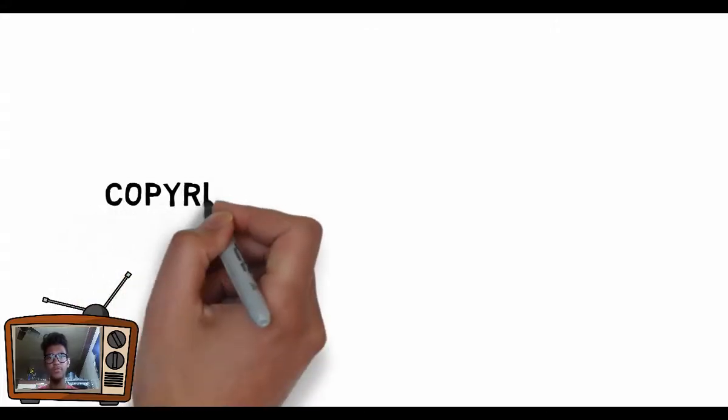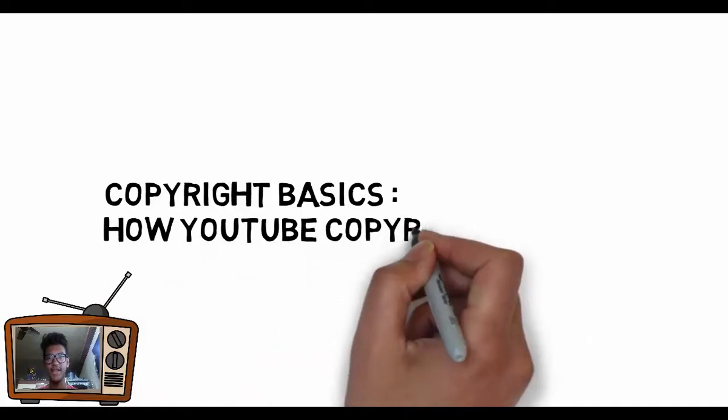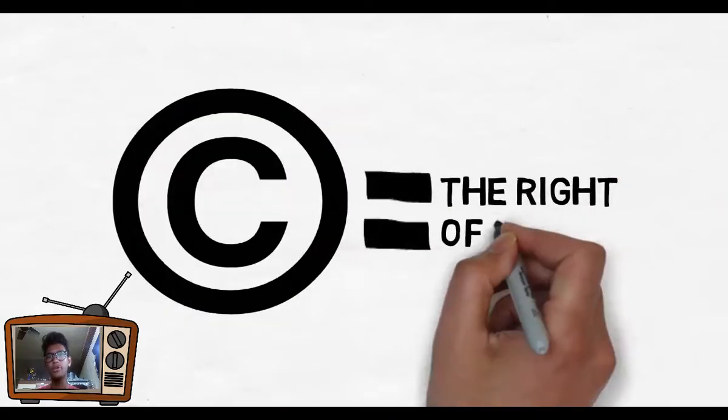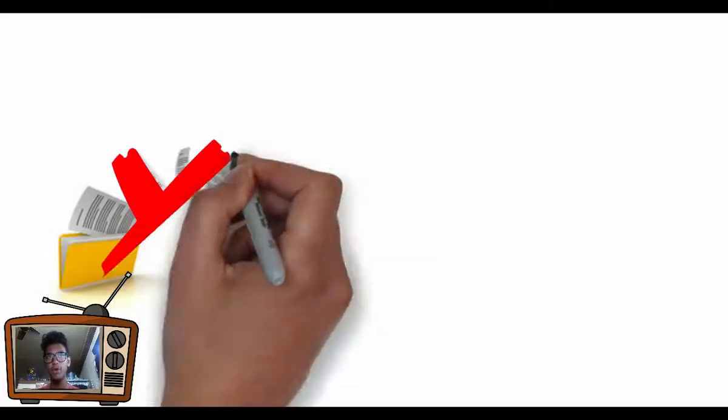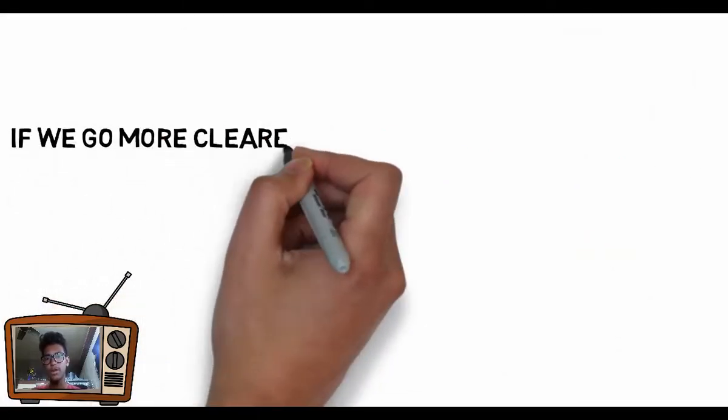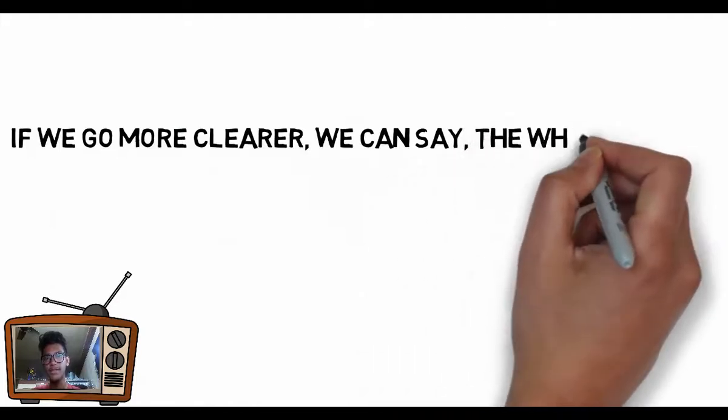So today in this video I'm going to tell you the copyright basics and how copyright works. First of all, the term copyright is the right of a thing, which means the thing cannot be copied, cannot be distributed, or cannot be resold.